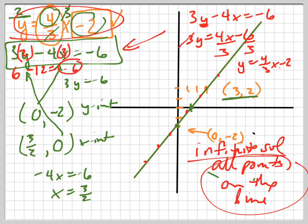So those were the same equation. They were just written in different forms. And that's why you get the solution being all points on both lines.